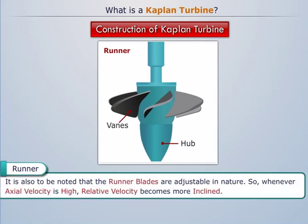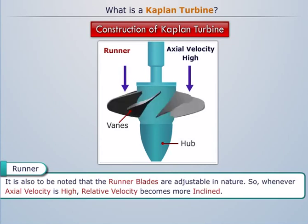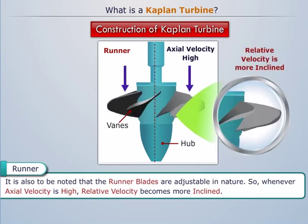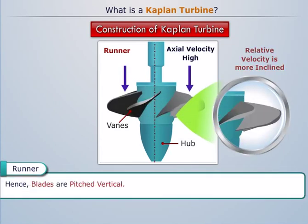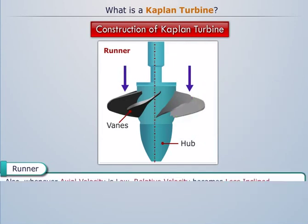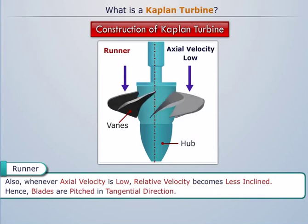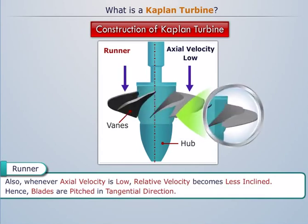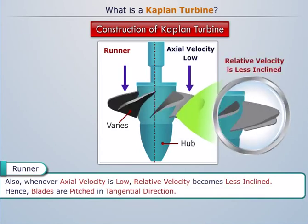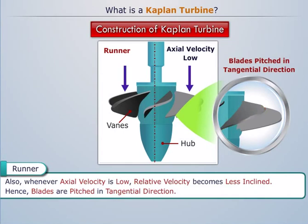It is also to be noted that the runner blades are adjustable in nature. So whenever axial velocity is high, the relative velocity becomes more inclined; hence, the blades are pitched vertical. Also, whenever axial velocity is low, the relative velocity becomes less inclined; hence, the blades are pitched in the tangential direction.